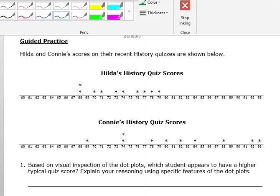Hilda and Connie's scores on their recent history quizzes are shown below. I have Hilda here and Connie here. Looking at Hilda, she has a couple of 68s, a 70, a 71, 73, 74, and then a 76, 77, 78, 79. Connie's lowest score here is a 69. She has a couple of 74s, some 78s, and then the rest she's in the 80s: 80, 82, 84, 88, 92, 92, 93.